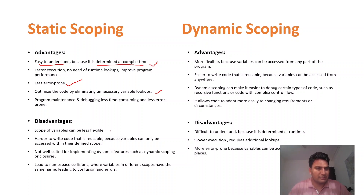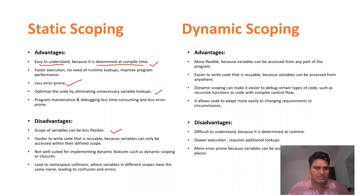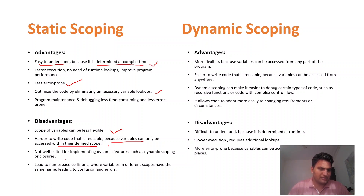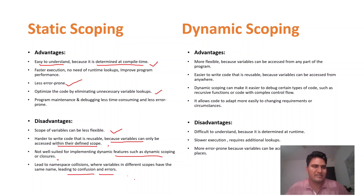What is the disadvantage of static scoping? It is less flexible compared to dynamic scoping, which is more flexible at runtime. It is harder to write reusable code because variables can only be accessed within their defined scope. It is not well suited for implementing dynamic features such as closures. It can also lead to namespace collision where variables in different scopes have the same name, causing confusion and errors.